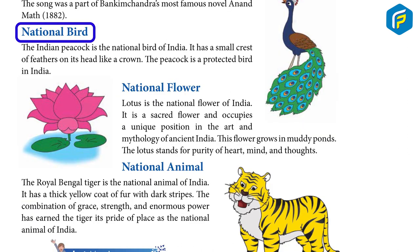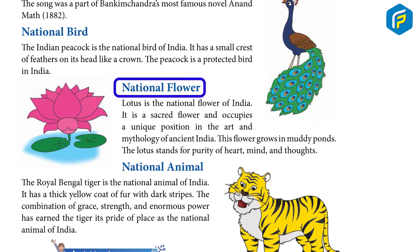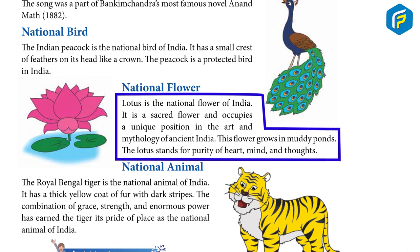National Bird: The Indian Peacock is the national bird of India. It has a small crest of feathers on its head like a crown. The peacock is a sacred bird in India. National Flower: Lotus is the national flower of India. It is a sacred flower and occupies a unique position in the art and mythology of ancient India. The lotus stands for purity of heart, mind and thought.